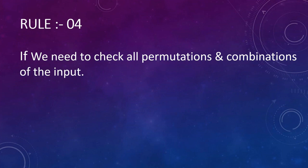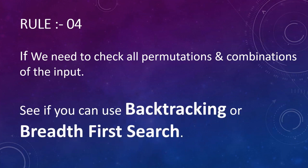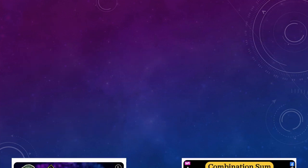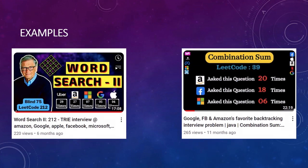Rule number four defines that whenever we need to check all the permutations and combinations of any given input — whether it's an array, string, matrix, or 2D array — most of the time we would be able to solve this using backtracking or breadth-first search. These approaches allow us to iterate over the given input in a way where we can see all permutations and combinations and make meaningful judgments.